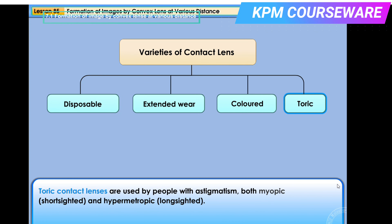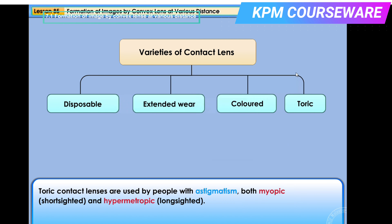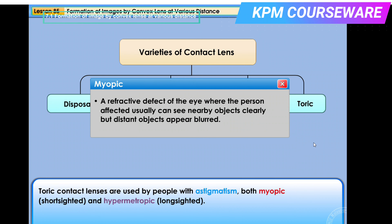Toric contact lenses are used by people with astigmatism, both myopic (short-sighted) and hypermetropic (long-sighted). Astigmatism is a condition that occurs when either the cornea or the lens of the eye is not perfectly spherical. As a result, the eye has different focal points in different planes, and a person affected can usually see nearby objects clearly but distant objects appear blurred.